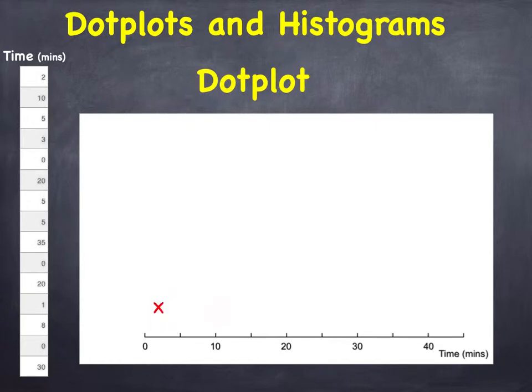And now simply mark each number according to its position on the scale. There's 2, then 10, 5, 3 and so on. And finally 30. And that's all there is to it.